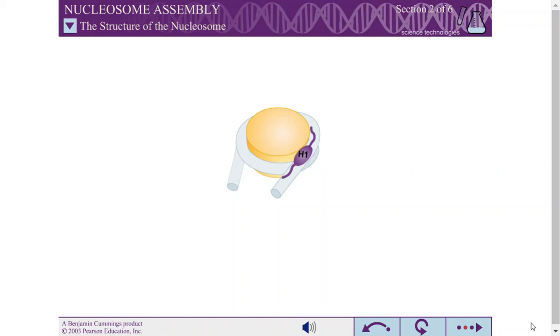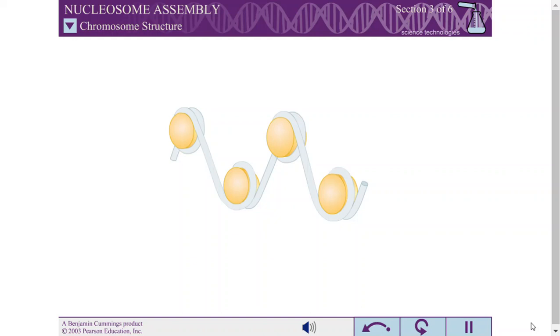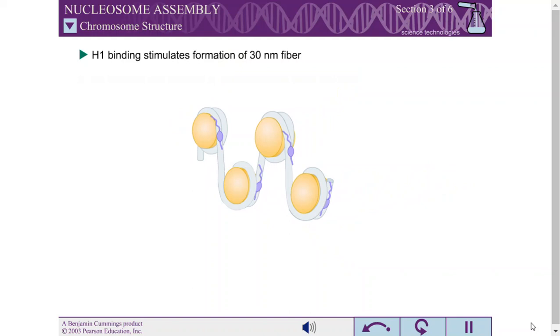The binding of the H1 histones to the DNA stimulates a first level of chromatin packing, the formation of a fiber that is 30 nanometers in diameter. The H1 histone binds both the end of the linker DNA and the middle of the nucleosomal DNA, bringing adjacent nucleosomes into close proximity.